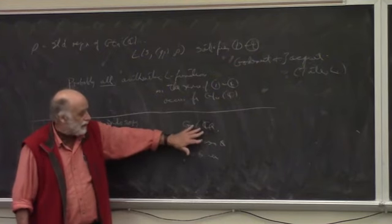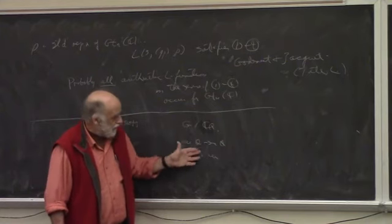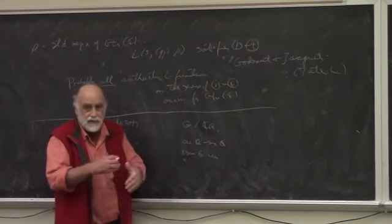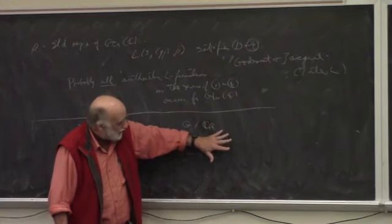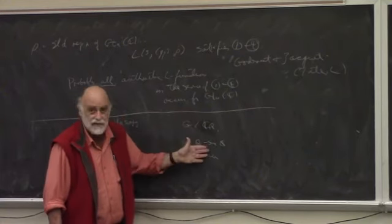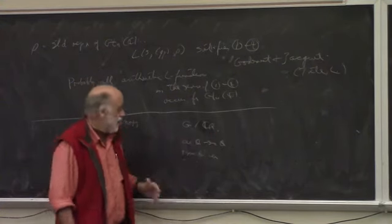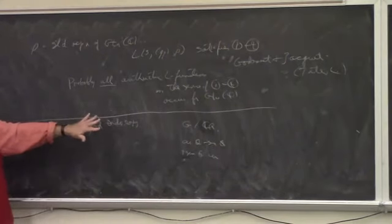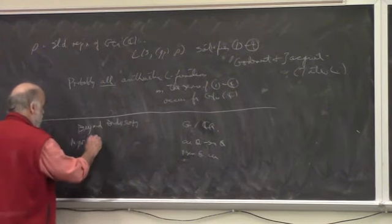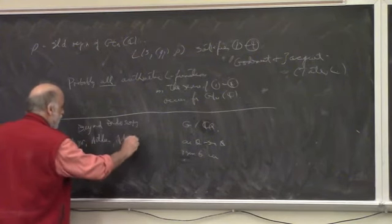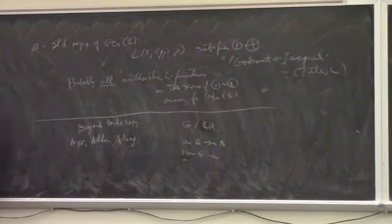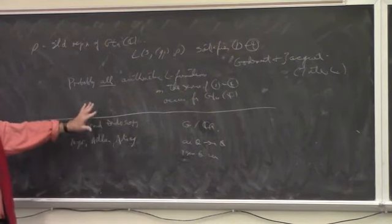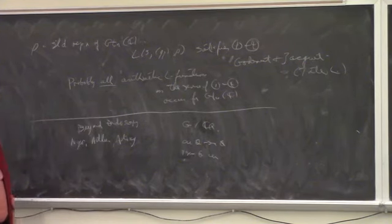The ultimate goal of this business is to look at the following situation. There's a very good classification of conjugacy classes in such a group. For GLn, the semi-simple conjugacy classes are classified by the characteristic polynomial. For other groups, that's no longer the case. Already for SL2 over R, I can have two elements with the same characteristic polynomial that are different conjugacy classes. The goal is to somehow reduce analysis on this group to analysis on the characteristic polynomials.